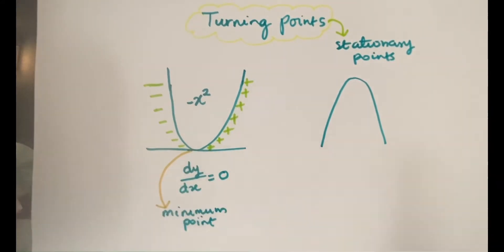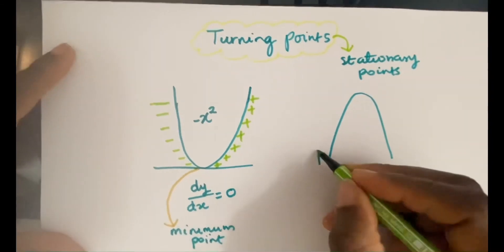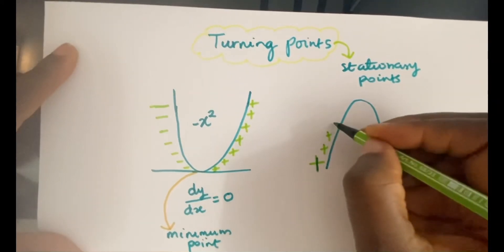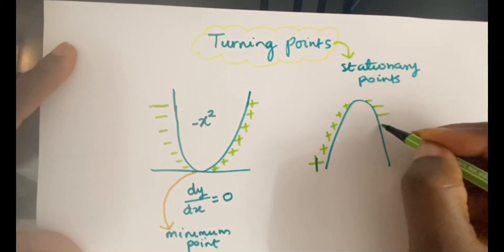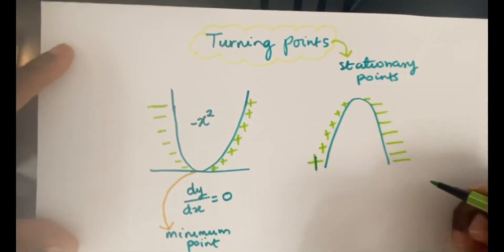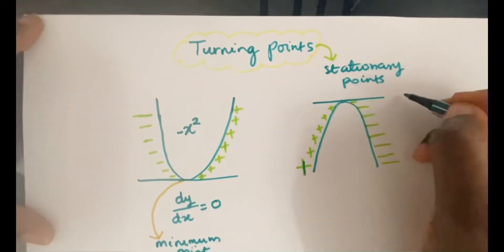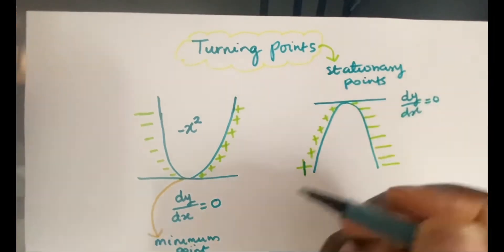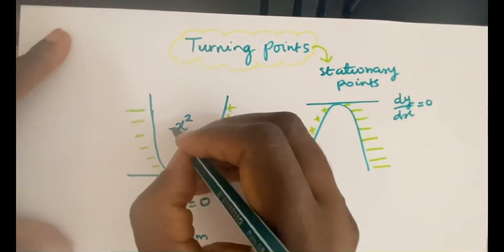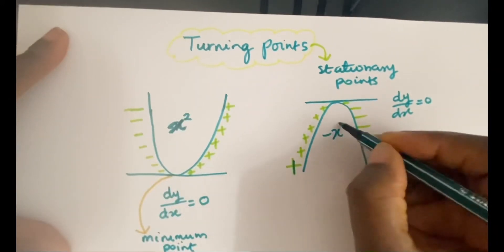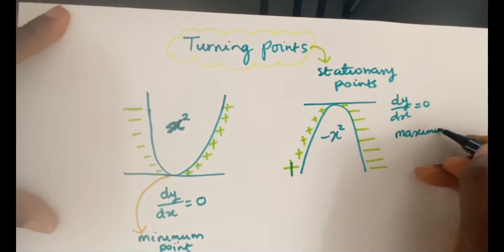The same thing happens on this side as well. It starts off with a positive gradient, getting smaller and smaller until it gets to zero, then it changes — becoming negative and getting bigger in the negative direction. If I were to draw a tangent here and differentiate, the dy/dx would be equal to zero at that point. For a negative x squared, that point where dy/dx equals zero is known as a maximum point.